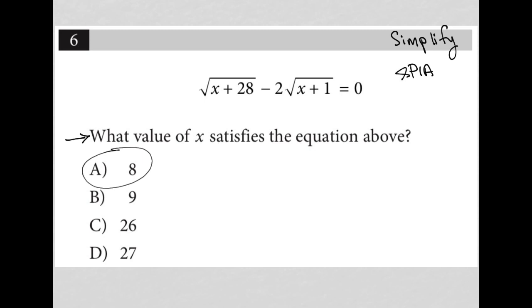So how do we use plug-in answers? We just say, how do I test answer choice A? Well, answer choice A is telling me that x is equal to 8. So I'm going to test it. Square root, instead of x plus 28, I say 8 plus 28 minus 2. Square root, instead of x plus 1, I say 8 plus 1 equals 0.